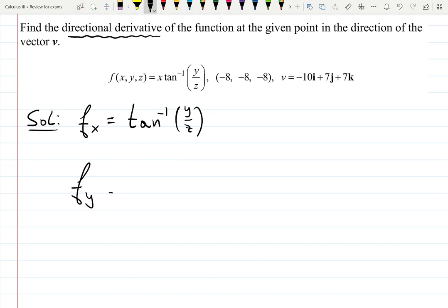Derivative with respect to y will be a little bit harder. x is a constant, so it should stay. Now it's going to be derivative of arctangent is 1 over 1 plus input squared, multiplied by the derivative of the function inside. Function inside is y over z, but y is a variable, so it will give me 1 over z as a constant.